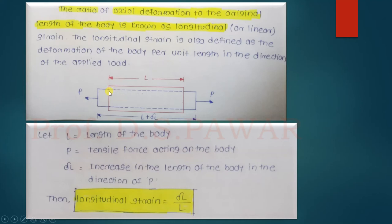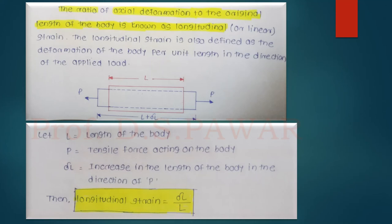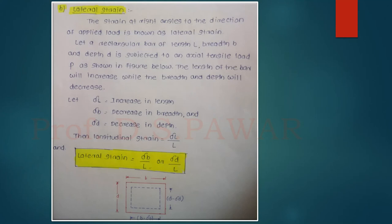Let L be the length of body, P the tensile force, and delta L the increase in length in the direction of P. Then longitudinal strain equals delta L divided by L — that is, change in length divided by original length of the body. This covers the definition of longitudinal strain.